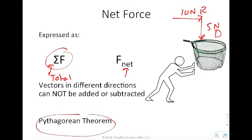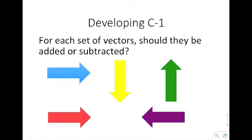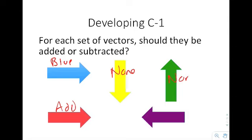For each set of vectors, should they be added or subtracted? The blue vector and the red vector would be added. The blue vector and the yellow vector — neither; you can't add or subtract them because they're not in the same or opposite directions. Same with blue and green — none. The blue and the purple you would subtract because they're in opposite directions.